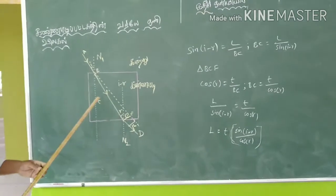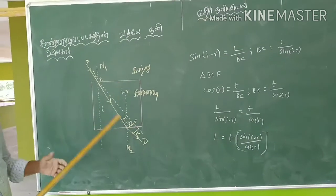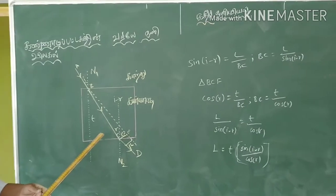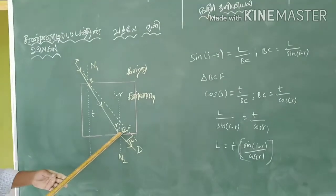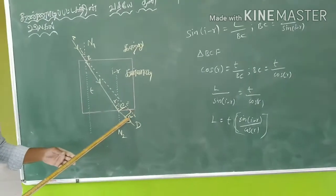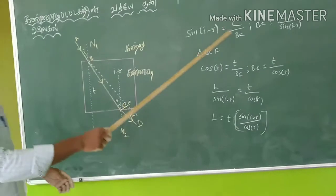We have seen that sin of I-R equals L by BC. We know what we have to do with the sign of C. We have Kannaadi Pattakath. So, we have L by BC.